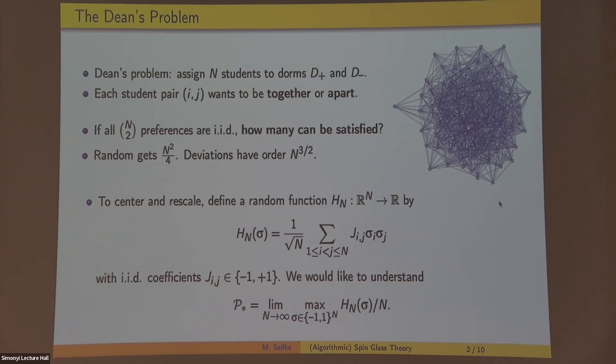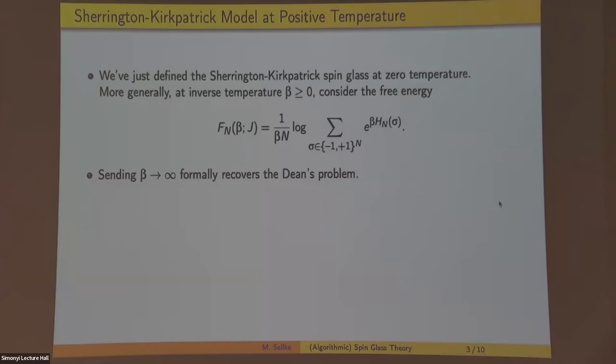So this is the SK model, the Sherrington-Kirkpatrick model at zero temperature. And more generally, at finite temperature, you can write down the same kind of object, which is the free energy. So instead of taking a maximum, which is kind of a very hard threshold, you take e to the beta h, you add these off, you take a log, and this is kind of a smoothed out maximum. So when beta is large, you get the maximum limit, but now you can do calculus and stuff, so it's a bit nicer.